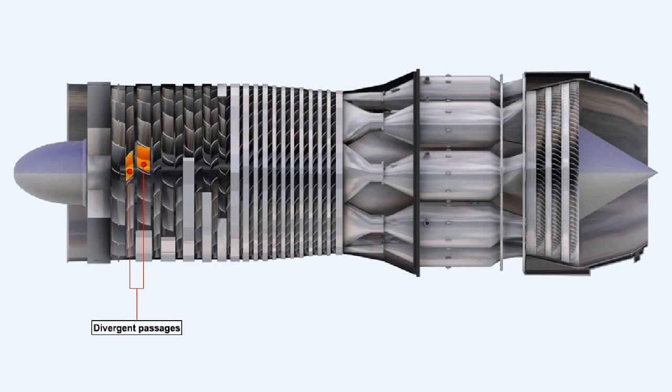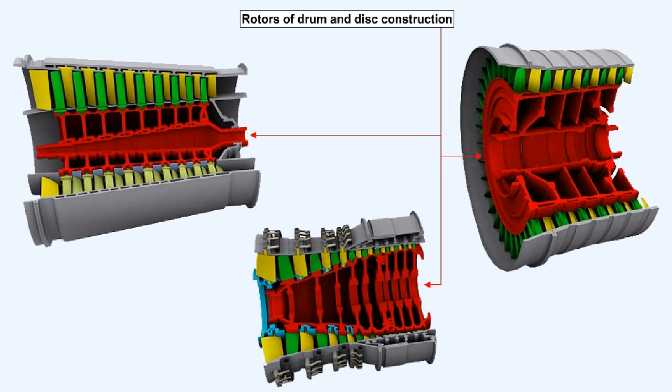The spaces between the rotor blades and the stator vanes form divergent passages. A number of disks, the number equates to the number of stages, are fastened together to form an integral rotor drum, which is driven by a turbine.